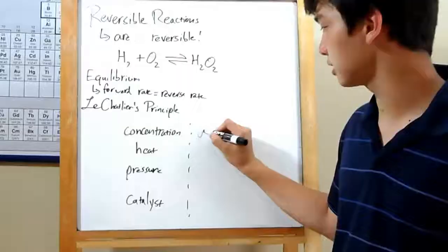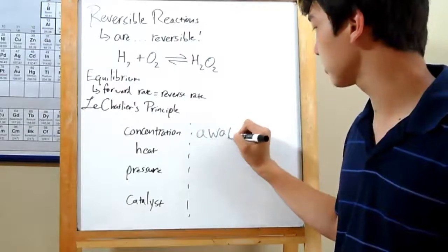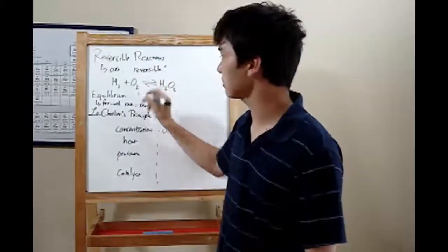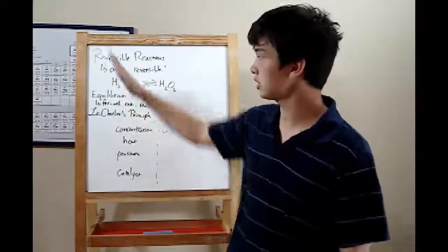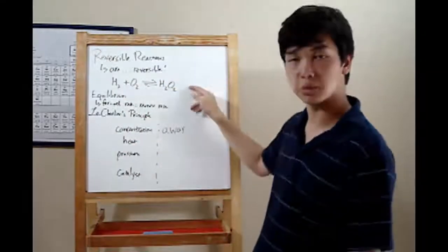An increase in concentration will force the reaction away from that increase. Like, say back up here, if we suddenly dumped a whole load of H2 on our reaction, it would shift away from the increase, creating more H2O2.